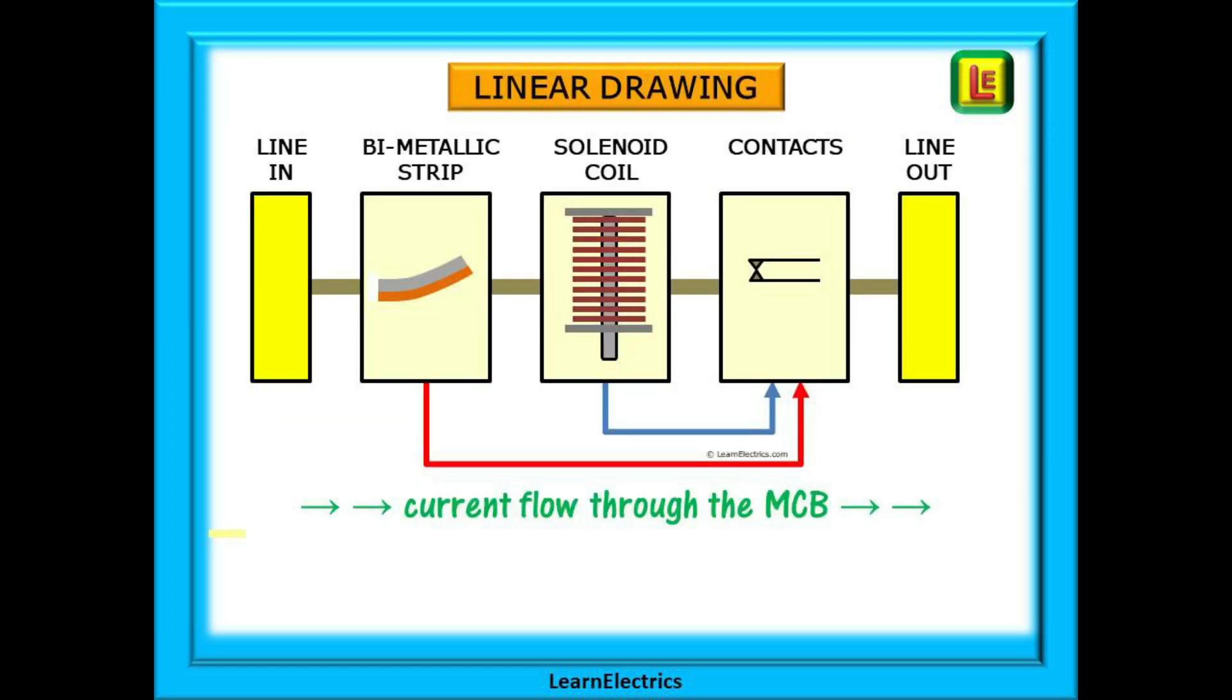We can draw all these component parts in one straight line and this does make it a lot easier to visualize. Starting on the left we have the line in. Voltage or current enters the device from the bus bar. Current then flows through the bimetallic strip and then through the solenoid coil.